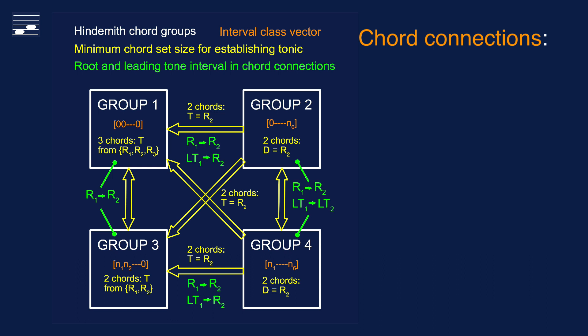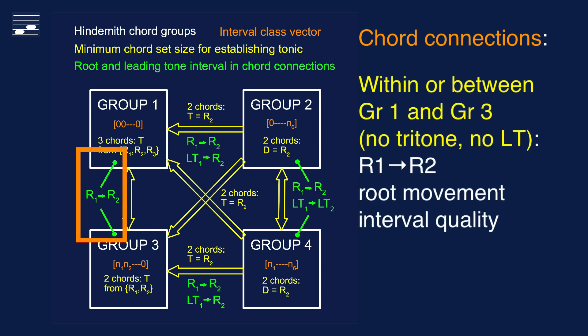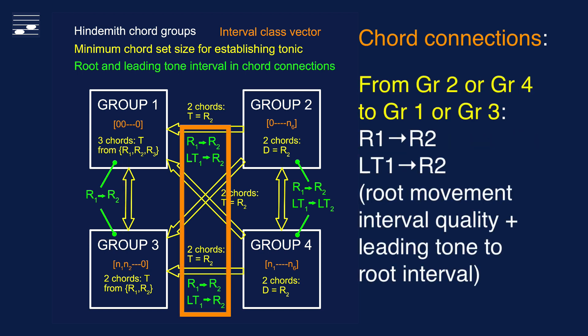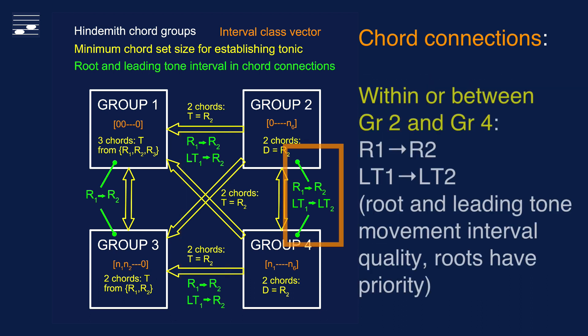I present a diagram illustrating these chord connection aspects, considering Hindemith chord groups one to four. On the left, when connecting chords within or between the non-tritone chord groups one and three, we evaluate the root movement interval quality. Resolving a tritone chord from either group two or four into a group one or three structure involves evaluation of the interval between the roots and between the first chord leading tone and the target chord root. Finally, when moving within or between group two or four chords, the root interval quality has higher priority than where the leading tone is landing.